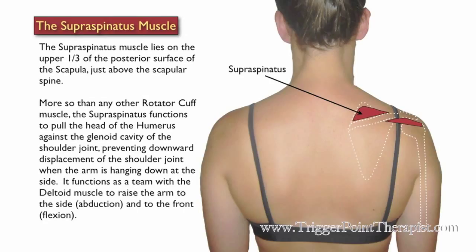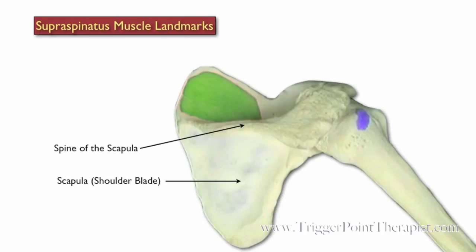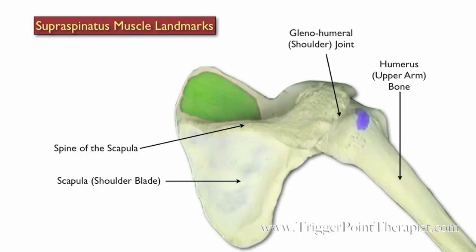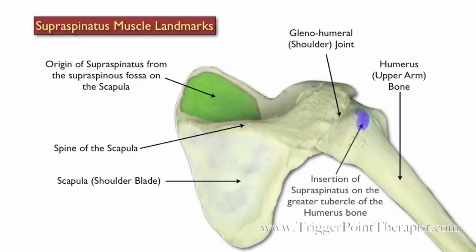It functions as a team with the deltoid muscle to raise the arm to the side (abduction) and to the front (flexion). Here are the landmarks for the supraspinatus muscle: the scapula, the spine of the scapula, the humerus, and the glenohumeral joint. The supraspinatus originates from the supraspinous fossa of the scapula and inserts on the greater tubercle of the humerus.